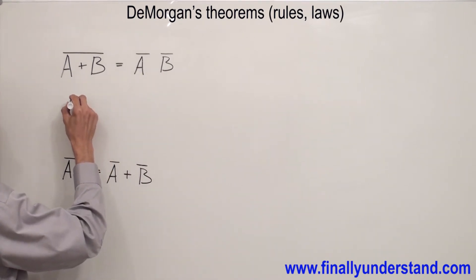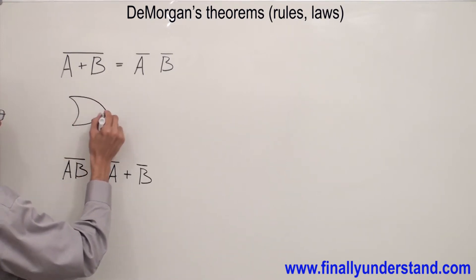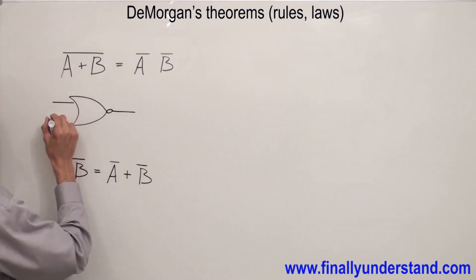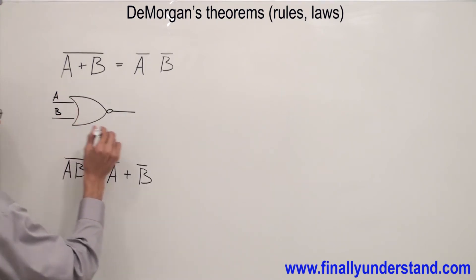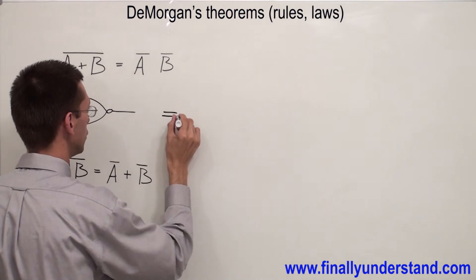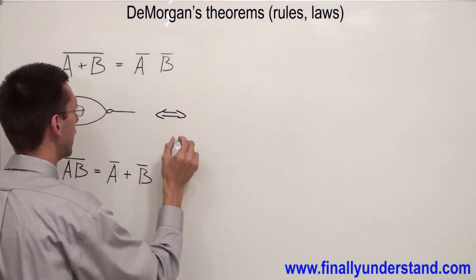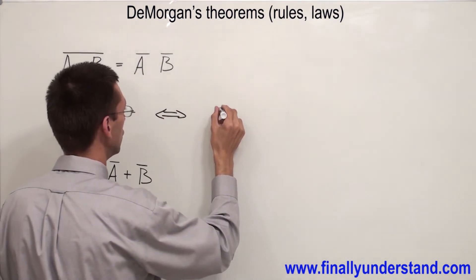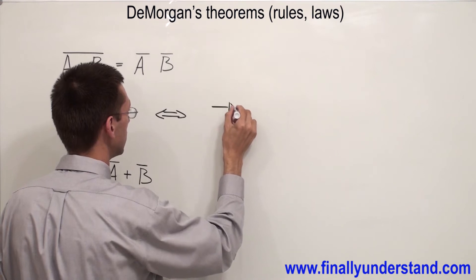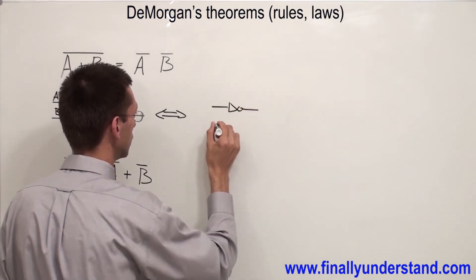So simply I can say that I have NOR gate, this is input A and this is B, is going to give me exactly the same output if I'm going to use AND gate with two inverters.